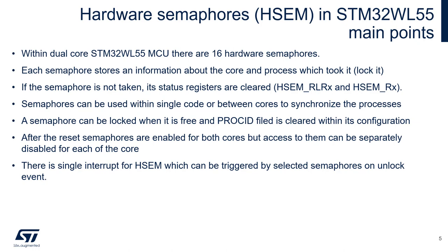Let's start with some main points concerning hardware semaphores implementation in STM32 WL microcontrollers. This peripheral exists within both dual core and single core STM32 WL devices. It allows you to communicate between cores, and within one core between different processes. We can find 16 hardware semaphores in STM32 WL devices. Each semaphore stores information about the core and process which took it — 'took' meaning locked. If a semaphore is not taken, its status registers are cleared.